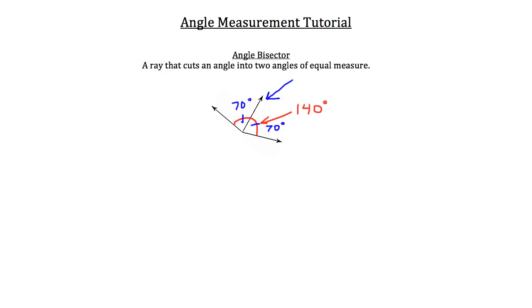Now what if the original angle were something like 4x. So it had an original measurement of 4x degrees. Well if this blue ray again was an angle bisector, that would cut that into two congruent halves again. One being 2x degrees and the other being 2x degrees.